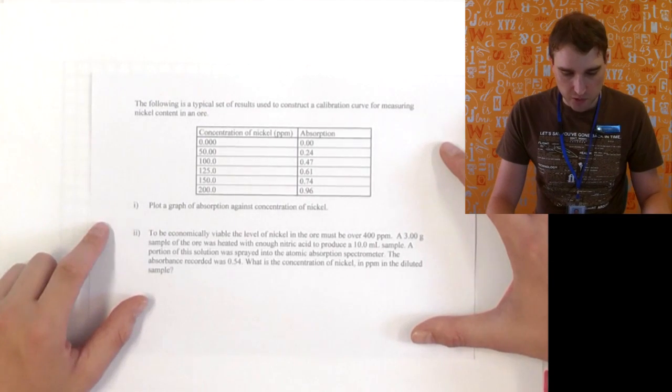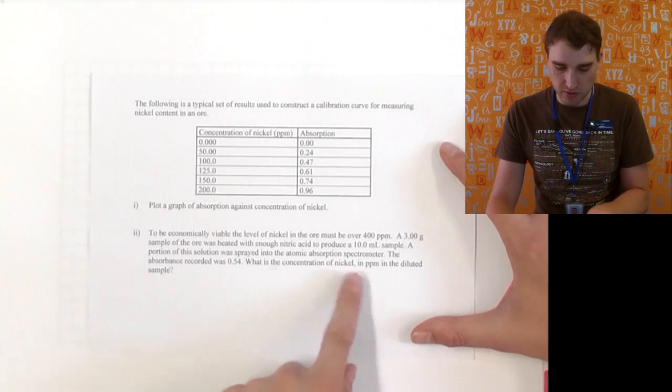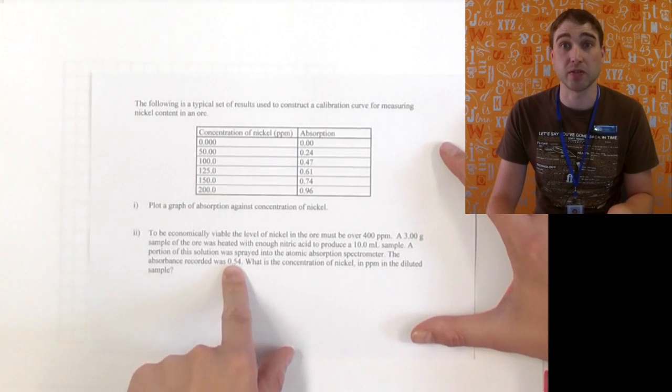Then it says plot a graph of absorption against concentration of nickel. And then in this question down here we have an unknown. So we have an absorbance, so from that we should be able to figure out the concentration.